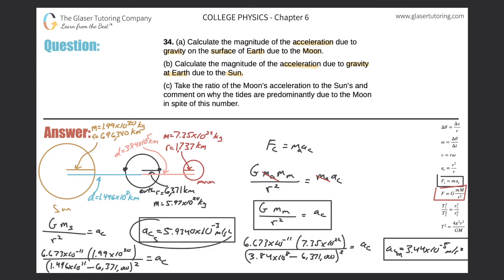It's over 100 times greater, this centripetal acceleration. Now letter C says: take the ratio of the Moon's acceleration to the Sun's and comment on why the tides are predominantly due to the Moon in spite of this number. Let's take the ratio — I'll put the larger over the smaller, so Sun over Moon: 5.9340 times 10 to the minus 3, all over 3.44 times 10 to the minus 5. That works out to be about 172.5 times larger — the Sun's centripetal acceleration is about 172.5 times greater than the Moon's.